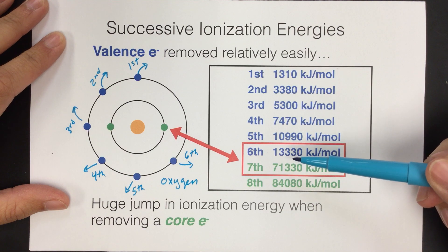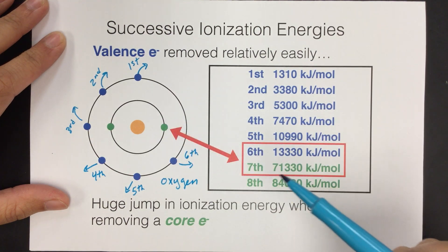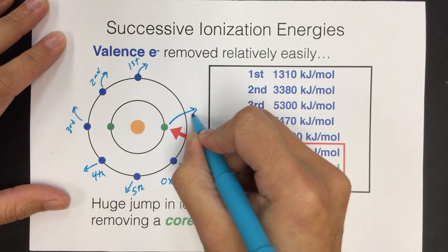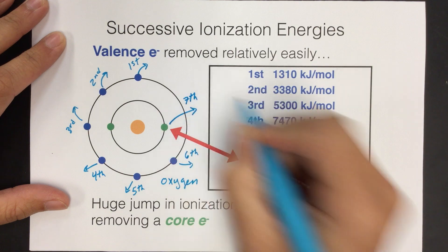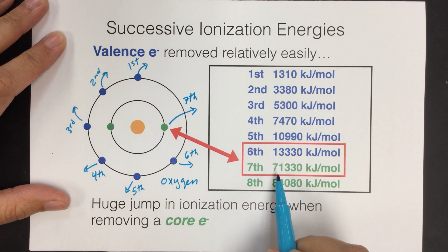However, after I've removed those six electrons, if I go to remove this one, the seventh one, we'll notice a huge, huge jump in the amount of energy required for us to remove that electron.